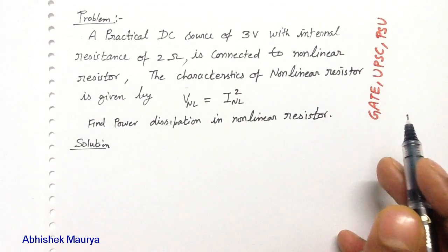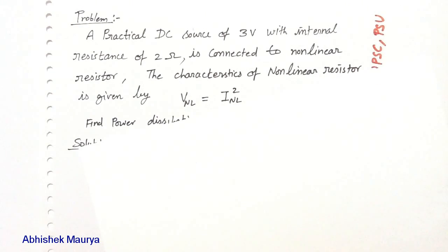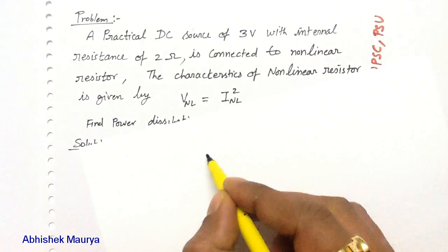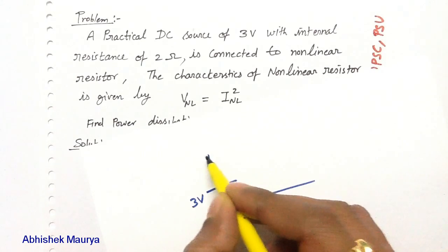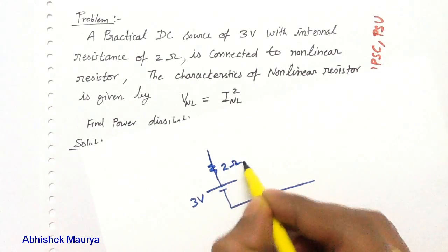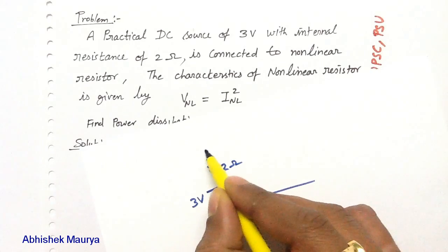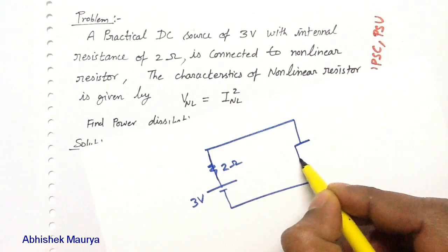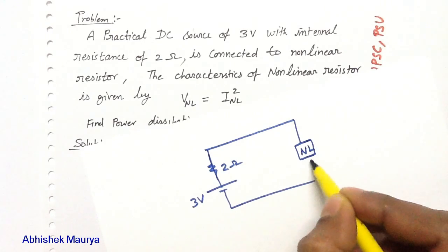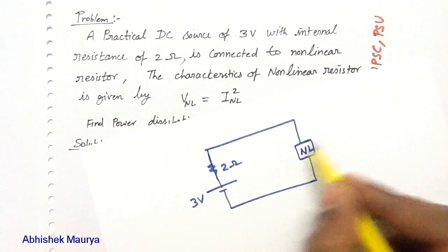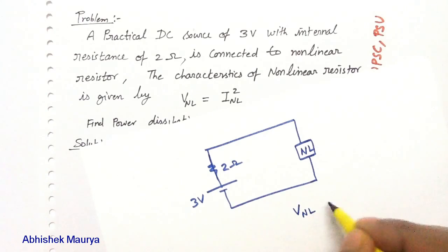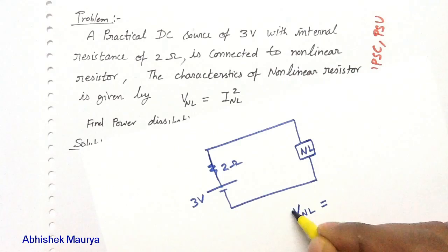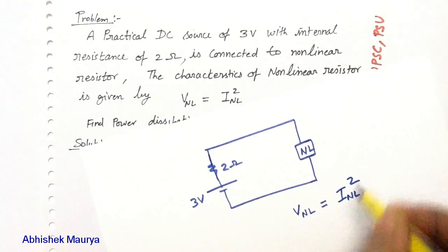Let me first draw the diagram. According to this question, there is a DC source of 3 volt. This DC source has an internal resistance of 2 ohm and it is connected to a non-linear resistor. The characteristics of the non-linear resistor is given by V_NL equals I_NL squared.